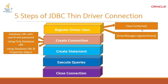It depends on what type of software requirement you have in your application. If it is a highly secure database, you can use the first approach - database URL with user ID and password. If your database supports an open-ended application, you can use only the database URL. If it is a native type of application on a different platform or deployment, you can use a database URL and Properties object.